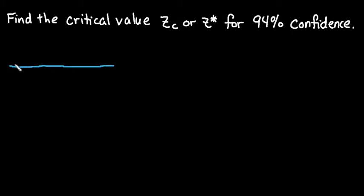All right, so what we have here is the normal distribution. And 94% confidence means that you have an area in the center that's equivalent to 94% or 0.94.